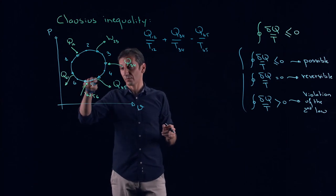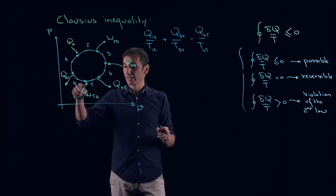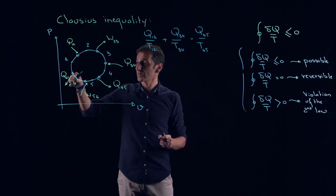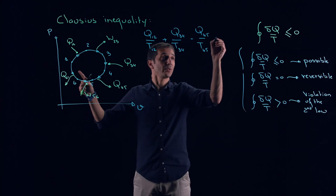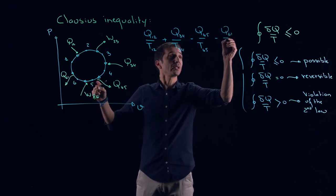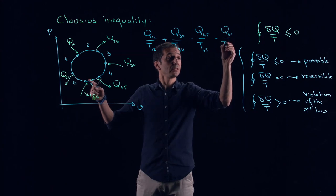We keep going. We did 4 to 5. We keep going. Now 5 to 6, work. It's fine. And from 6 to 1, we have also heat rejected. So it's minus Q6,1 over T6,1.